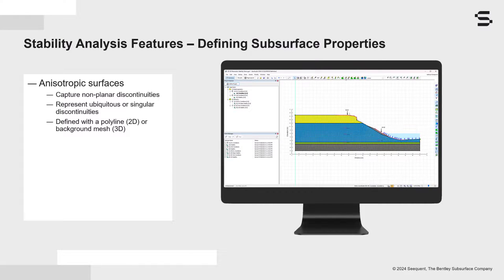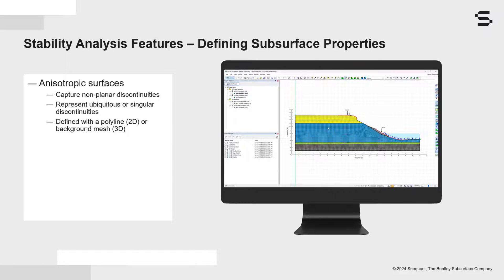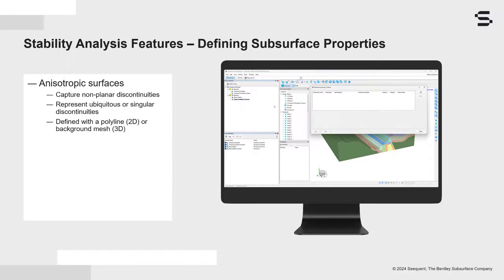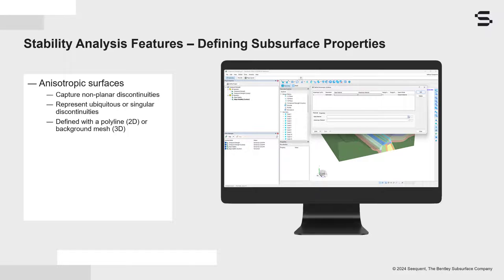Anisotropic surfaces can now be added to both SlopeW and Slope3D to define nonplanar geological discontinuities present due to bedding, schistosity, joints, foliation, cleavage, fractures, or faults. In 2D, the anisotropic surface is defined with a polyline in the same manner as a piezometric surface. In 3D, the anisotropic surface is defined with a background mesh. A material is assigned to each anisotropic surface to define the appropriate strength of the discontinuity.